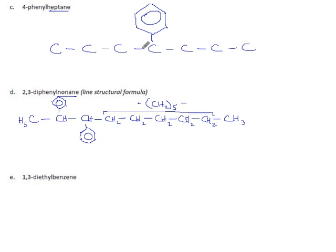Now they ask for a line structural formula for this one. So we start with nonane, nine carbons, we get one, two, three, four, five, six, seven, eight, nine. And then the second one would have, I get to draw hexagons now.